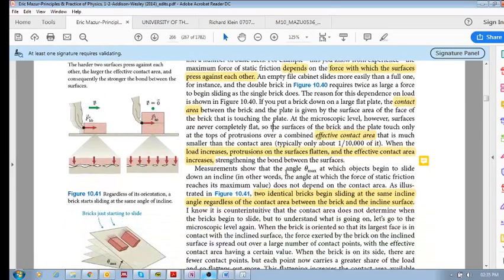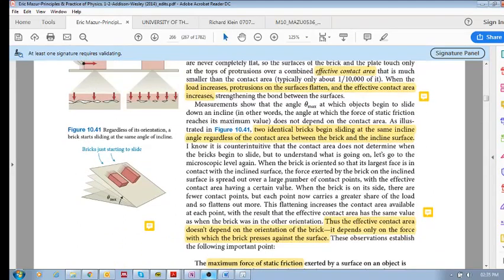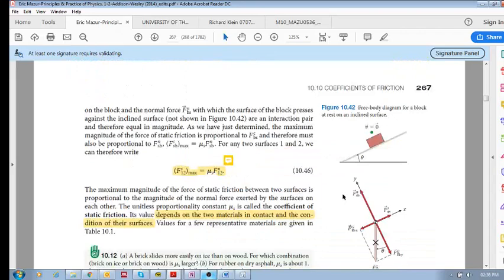And so the effective contact area depends only on the force with which the brick presses against the surface. So this effective contact area is dependent on the force and the maximum force of static friction. It is the maximum friction force before the object will start moving. So this maximum force of static friction exerted by a surface on an object is proportional to the force with which the object presses on the surface. Why? Because the force is what causes the effective contact area. And the larger the force, the larger the effective contact area. And it does not depend on the contact area, but on the effective contact area. We'll look at this in the next one.